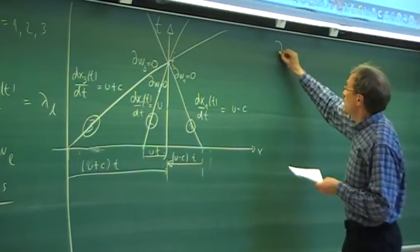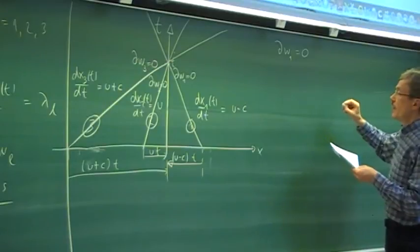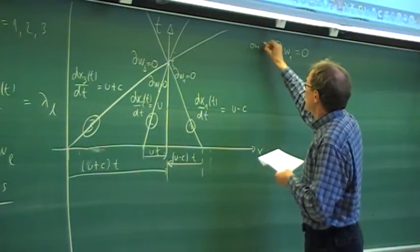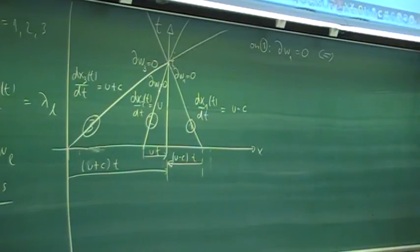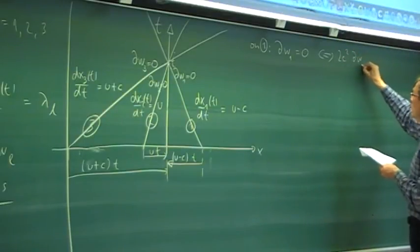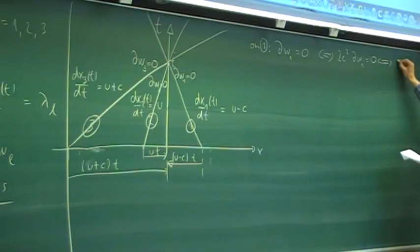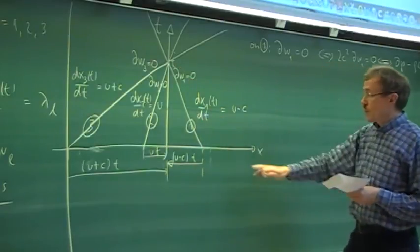In any case, dW1 is zero on characteristic number one. If we look at the equations and multiply by 2c², we get a simpler expression: the pressure change minus rho·c times the velocity change equals zero. We can relate the pressure and velocity at the foot-point and current location using this relation.